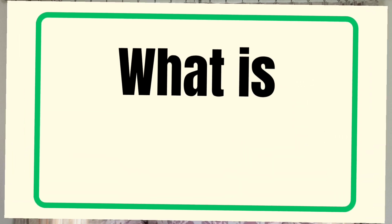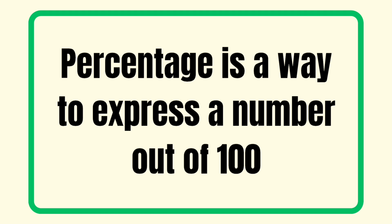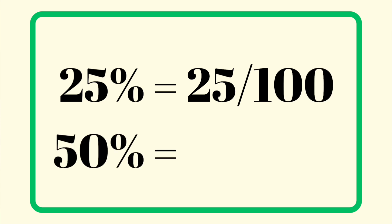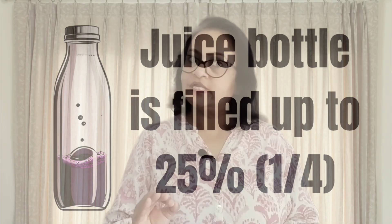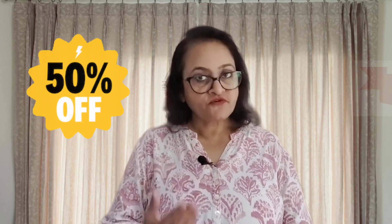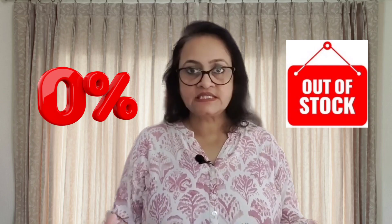This is the sign of percentage. What is percentage or percent? Percent means per cent — cent is century, means 100. So per cent means per hundred. Percentage is a way to express a number out of 100. So 25% means 25 out of 100, and 50% means 50 out of 100. Suppose a juice bottle is filled up to 25% — that means it's only a quarter full. Percentage is just the way of showing a part of a whole. 100% battery means fully charged, 50% off means you will get the product at half the price, and 0% means nothing out of 100.